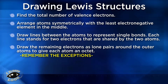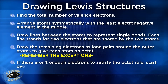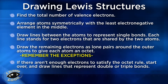When constructing Lewis structures, remember the exceptions and always take those into account. If there aren't enough electrons to satisfy the octet rule, start over and draw lines that will represent double or triple bonds that will resolve the problem. Keep in mind you have to find a home for all of the electrons that were tallied in your initial electron count of the molecule.